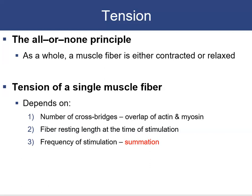The all-or-none principle: a muscle fiber is either contracted or relaxed — there are no partial contractions. This principle applies only to a single fiber, not to the whole muscle. The tension of a single muscle fiber depends on: the number of cross bridges and overlap of actin and myosin, the resting fiber length at stimulation, and tension is greatest when the zone of overlap is large.